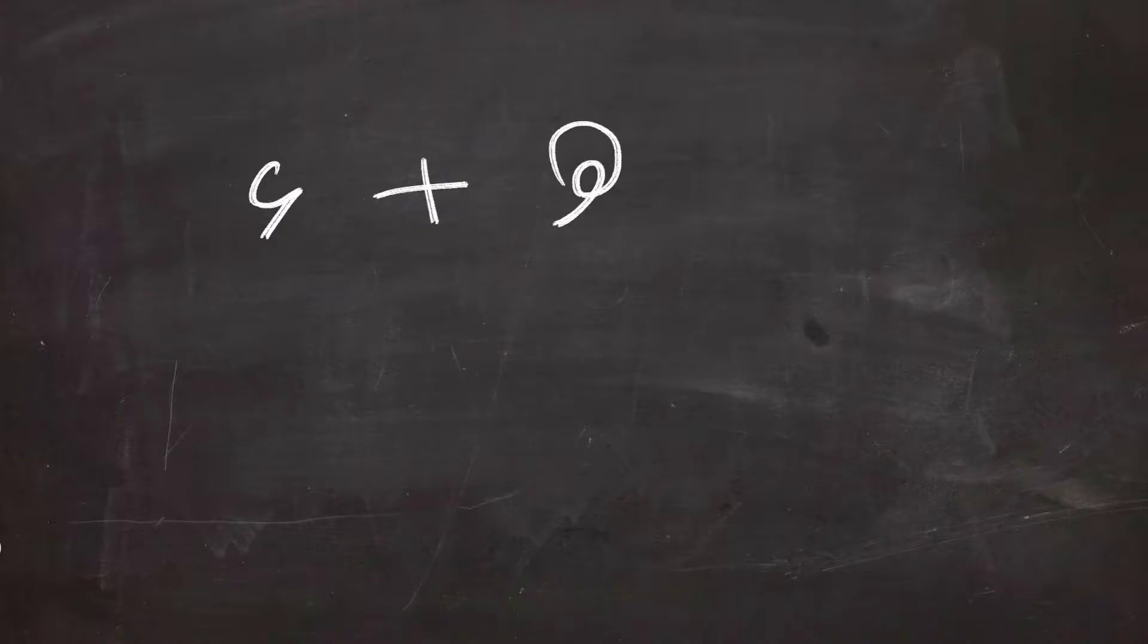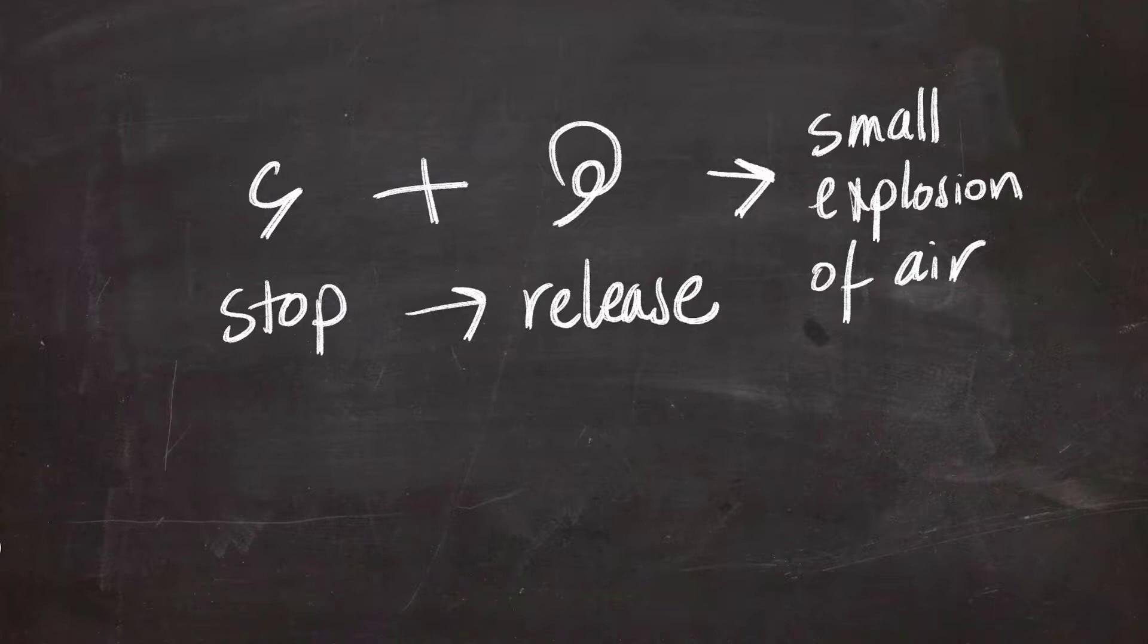As you've seen, closing the vocal folds is the most important characteristic in pronouncing the Hamza. But what happens if the Hamza is followed by Ha? What's going to happen is a small explosion of air because you have stopping the air and then releasing all of it at once.